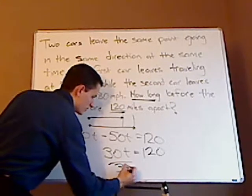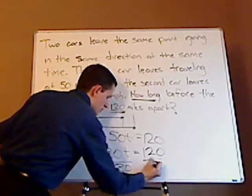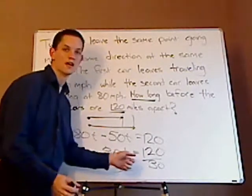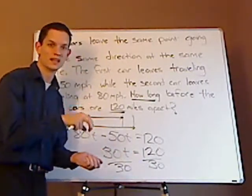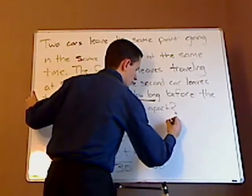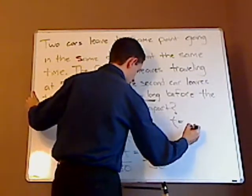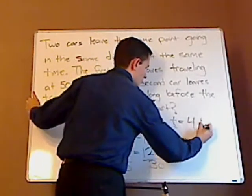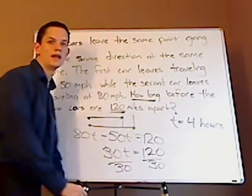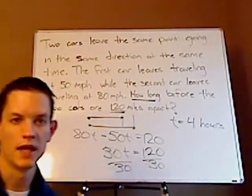Divide both sides by 30, 30 cancels out here, and 30 cancels out here. 30 actually goes into 120 evenly. So t is going to be 4 hours. And that's it.